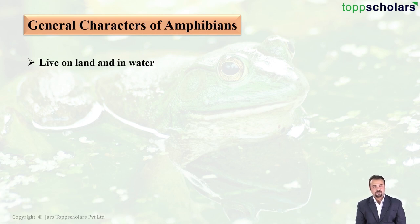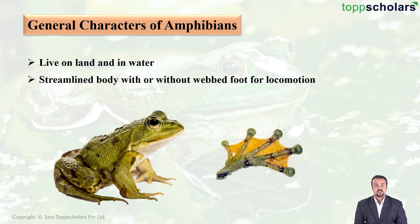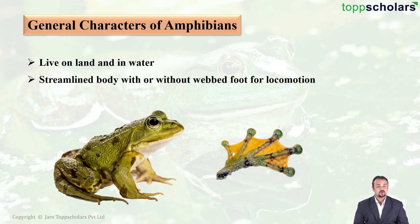Amphibians have the ability to live on land as well as in water, which is why they are called animals having a dual life. They have a streamlined body — usually tapering towards both ends — with or without webbed feet for locomotion. Do you see the feet of the frog here? Notice that in between the toes there are yellow-colored connections called webbing, which turns their feet into paddle-like structures, making it very easy for the frog to swim underwater.